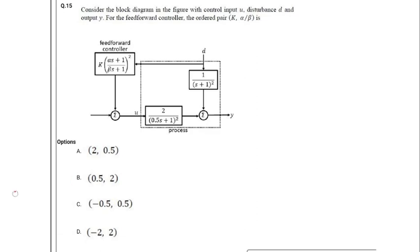The block input is u — control input u — disturbance is d, and output is y. For the feed forward controller, let's call it g_ff: g for transfer function and ff for feed forward controller. It's the transfer function for the feed forward controller. The ordered pair k and alpha upon beta is what we need to find.